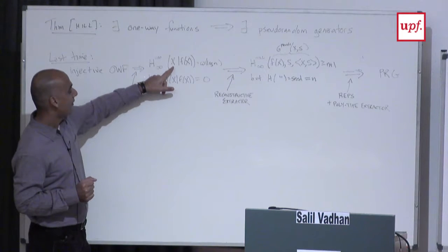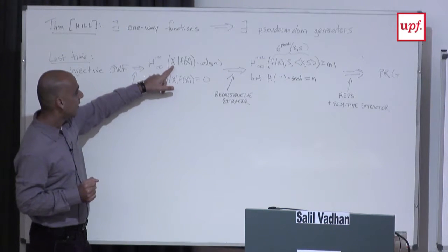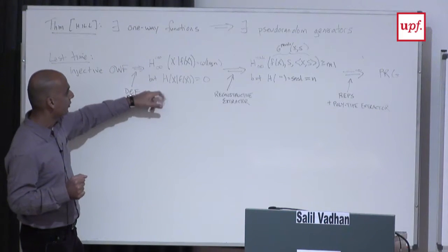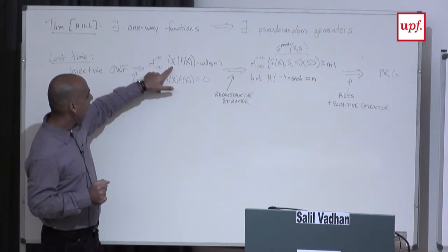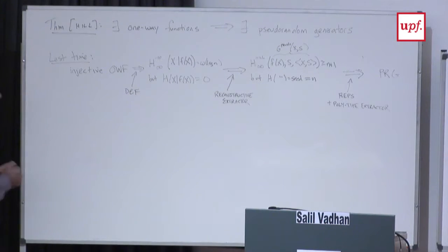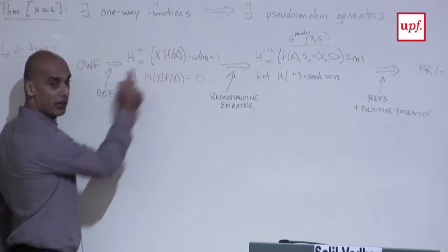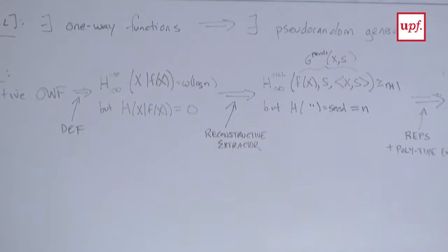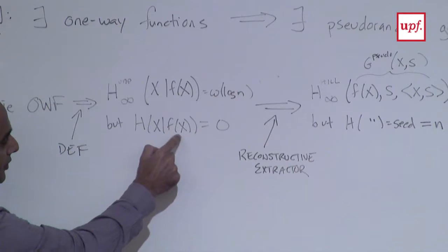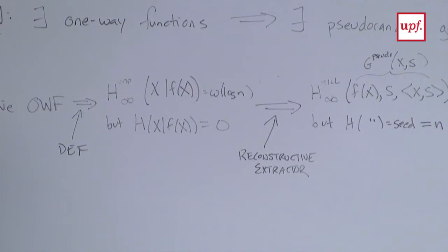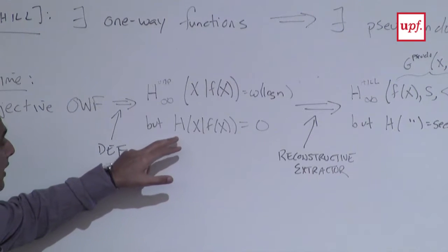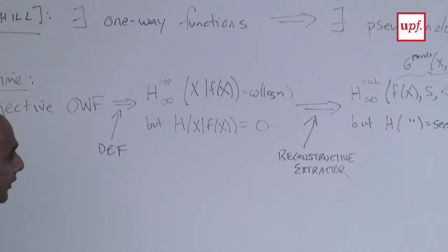On the other hand, information theoretically, x is completely determined from f(x). So we have a gap between this kind of pseudo-entropy and the actual entropy in x.